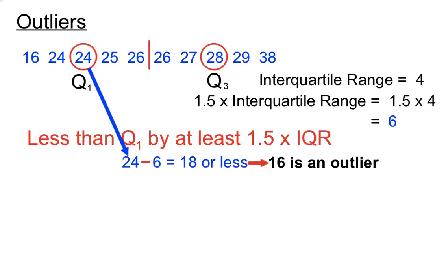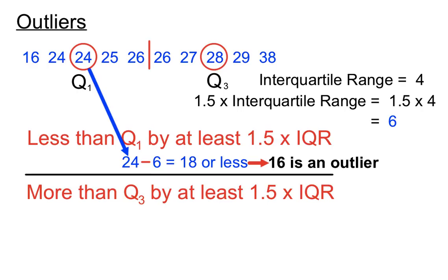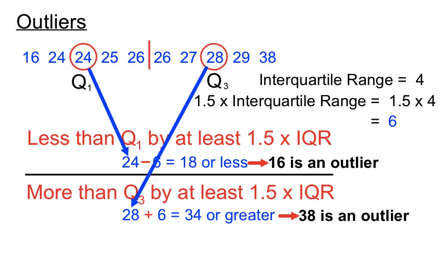Let's see if 38 is also an outlier. To be an outlier on the high side, it's got to be more than Q3 by at least 1.5 times the IQR. The IQR reference amount was 6, so if we take our Q3 of 28 and add 6 to it, we get 34. Any scores that are 34 or bigger can be classed as an outlier. So yes, 38 is bigger than 34, so we would say 38 is an outlier.